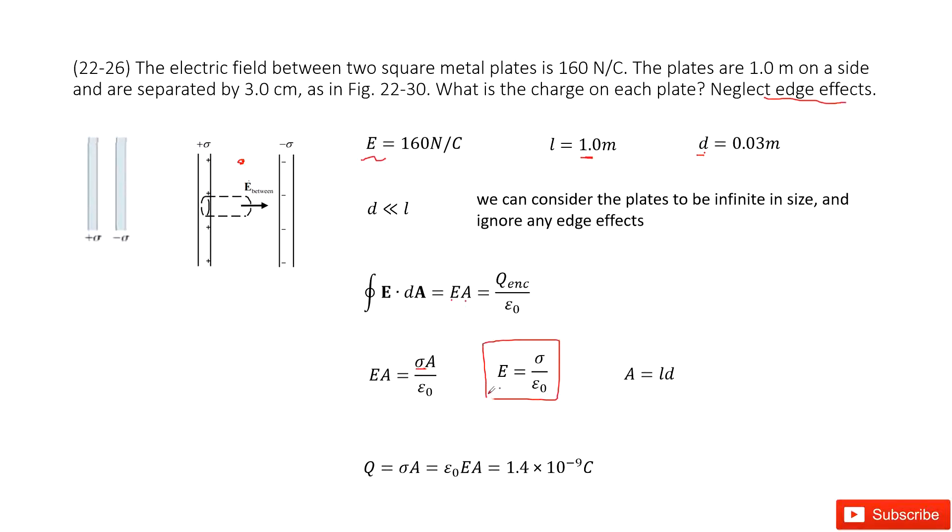If we want to find the charge Q for the whole plane, for one plane, that is the charge density times A. Charge times the surface for these planes. The surface for these planes is just L times D. So we input the E and A inside and can get the answer.